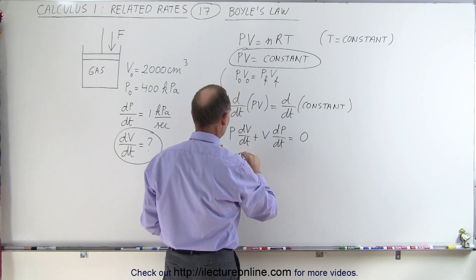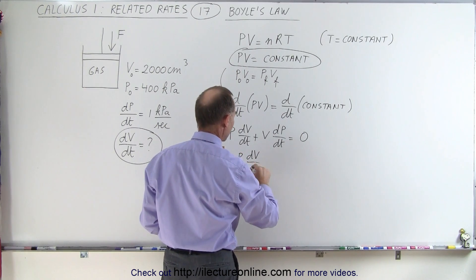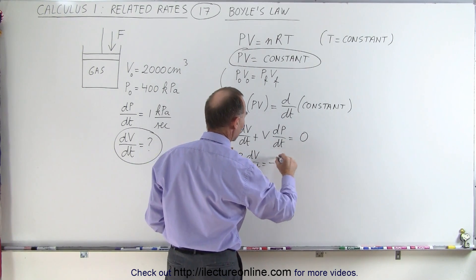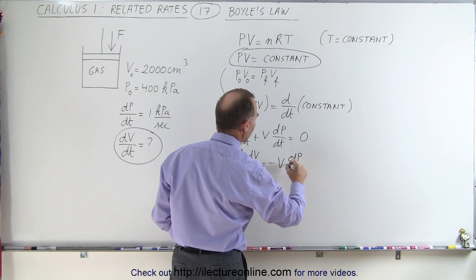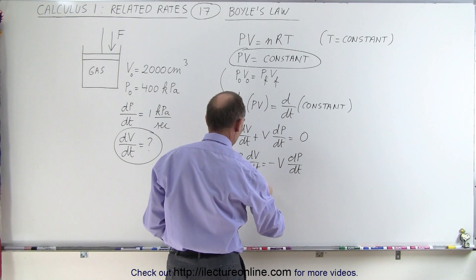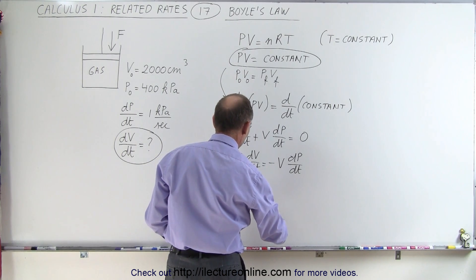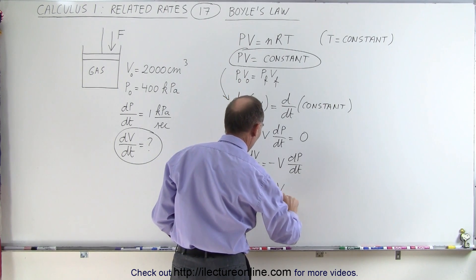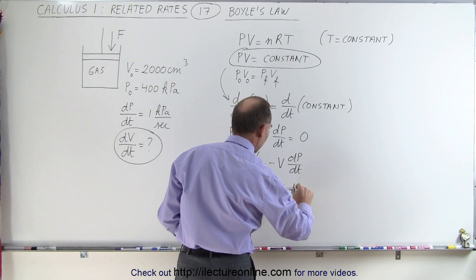Moving this to the other side, we get P times dV dt is equal to the negative volume times dP dt. And dividing both sides by P, we get dV dt is going to be equal to the negative V over P times dP dt.